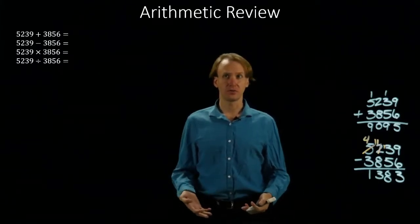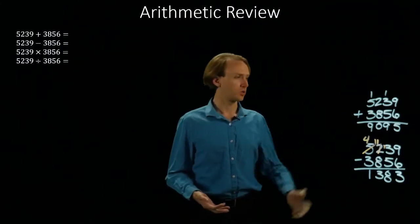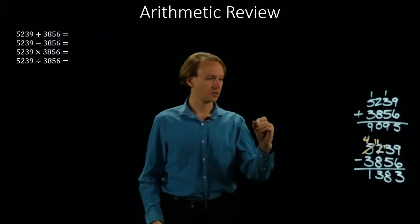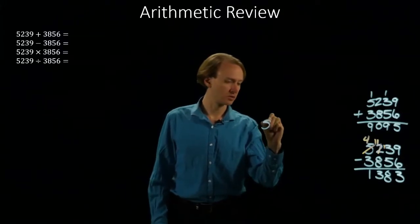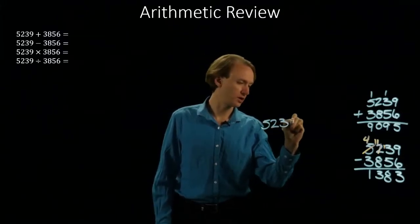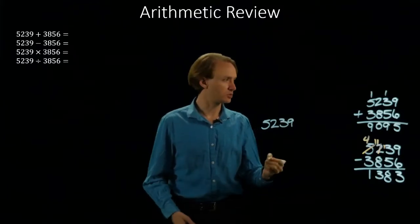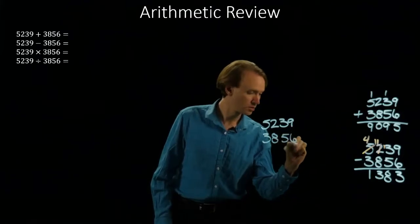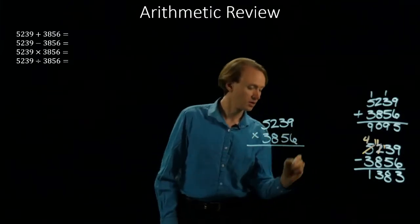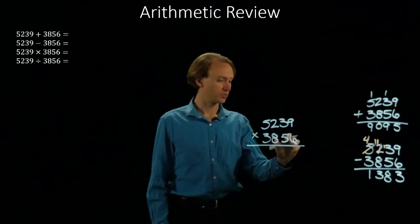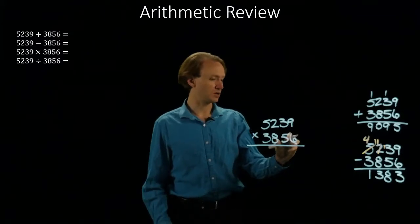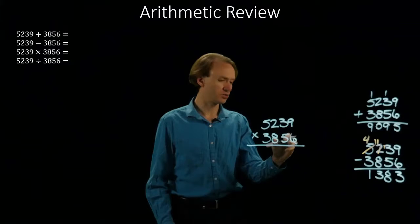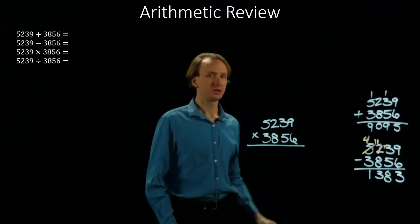Multiplication and division are going to be a little bit longer and harder, and we're going to do a lot of addition or subtraction in the process. So if I start with 5239, and I want to multiply that by 3856. I'm going to start with the rightmost digit in my number on the bottom. And I'm going to multiply that by everything in the top number.